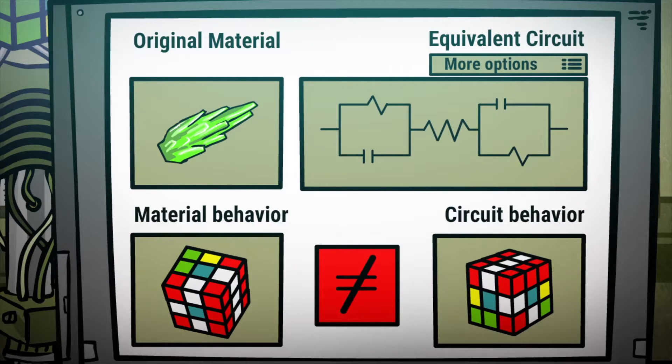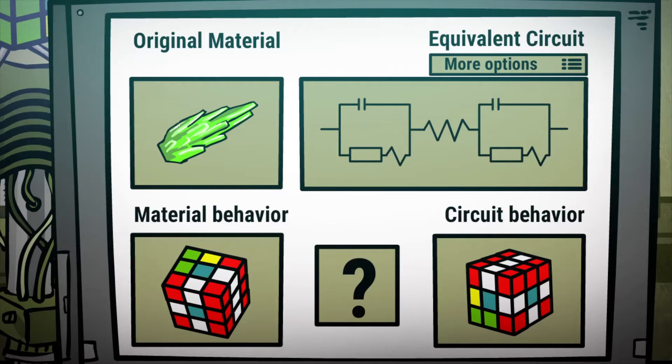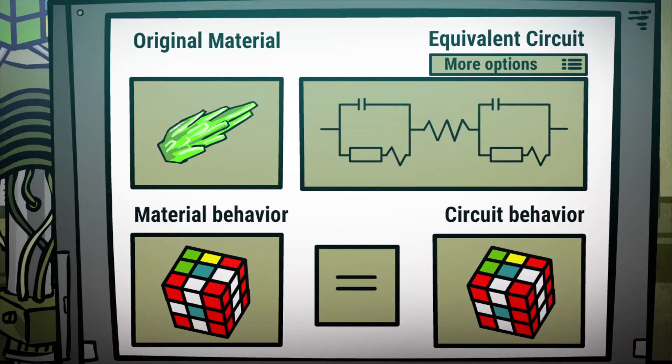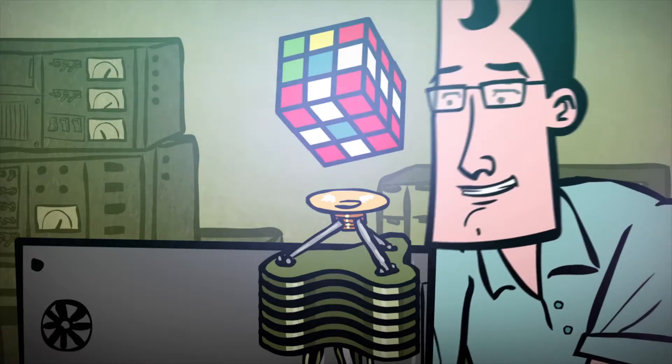When an equivalent circuit behaves like the sample in question, theoretically the scientist can correlate different parts to different mechanisms—theoretically. In practice, it can be problematic.